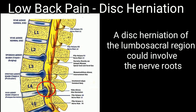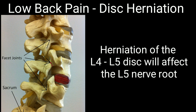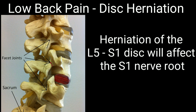A disc herniation of the lumbosacral region could involve the nerve roots. In 95% of all disc herniation cases, the L4-L5 or L5-S1 disc levels are involved. Herniation of the L4-L5 disc will affect the L5 nerve root, while herniation of the L5-S1 disc will affect the S1 nerve root.